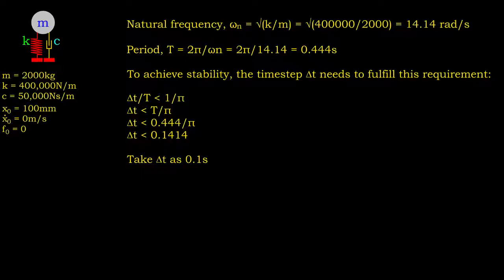Now let's see the procedure to implement CDM. First, we need to determine the system natural frequency and period. To achieve the stability condition, the time step should not exceed period over pi. After knowing the limit of time step, we may choose an appropriate time step.